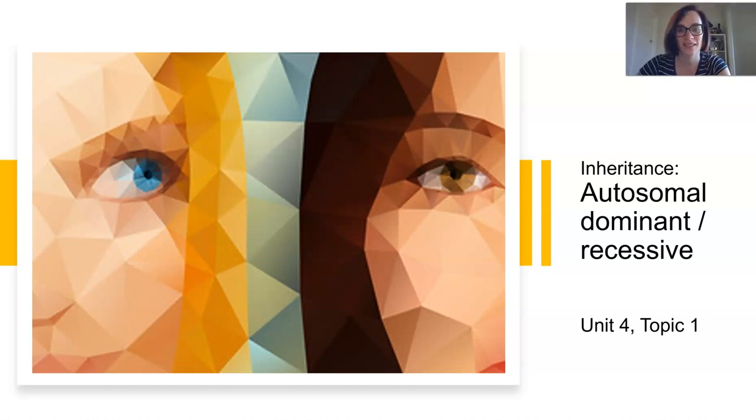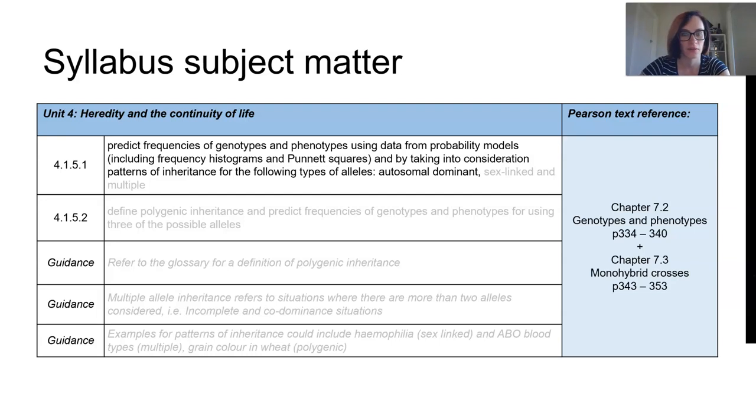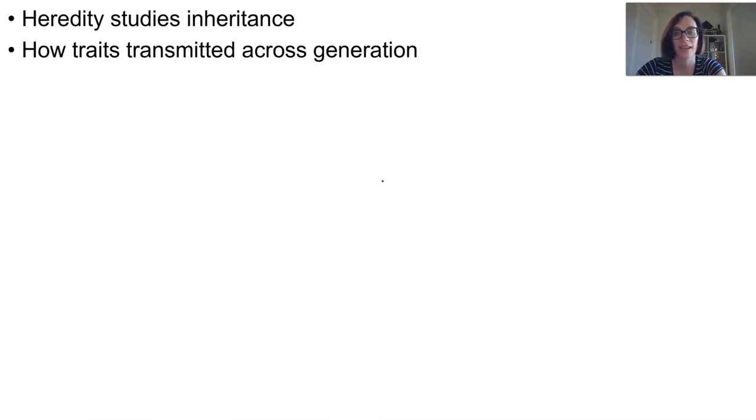In this lesson we're starting off with inheritance and we're looking at autosomal dominant and recessive type of inheritance. So really only covering off this point here. Heredity studies inheritance, so it's how characteristics and traits are transmitted from one generation to another.